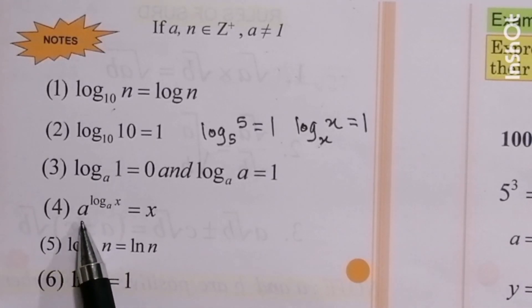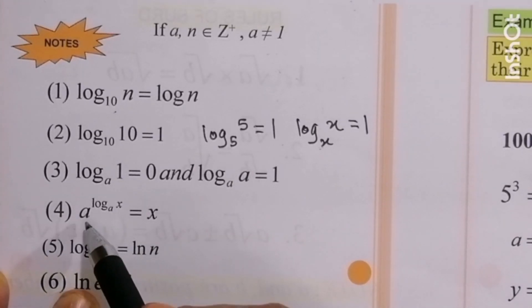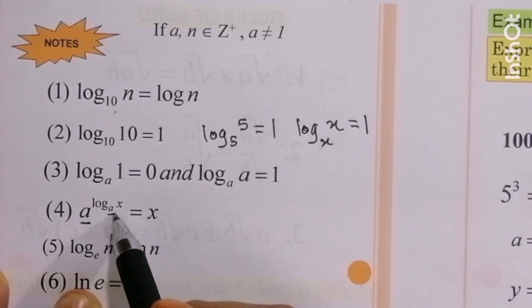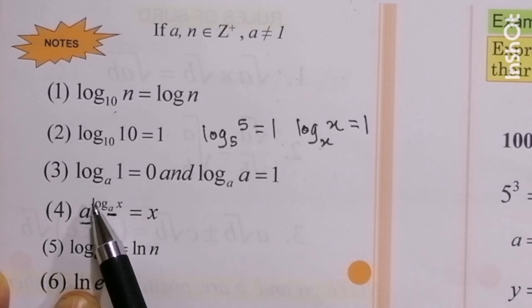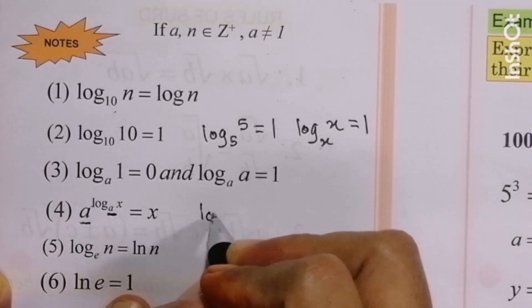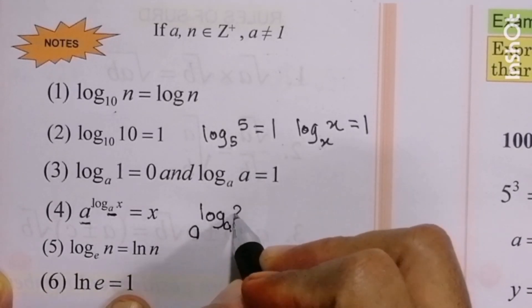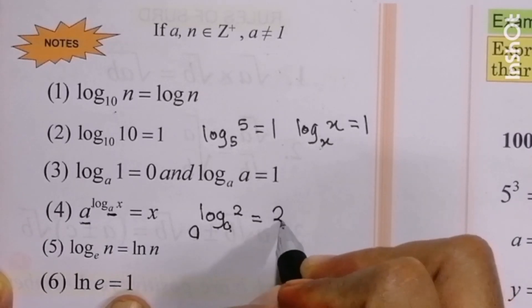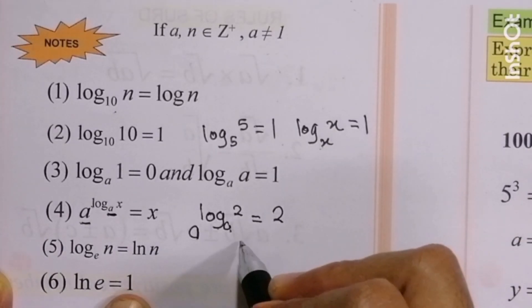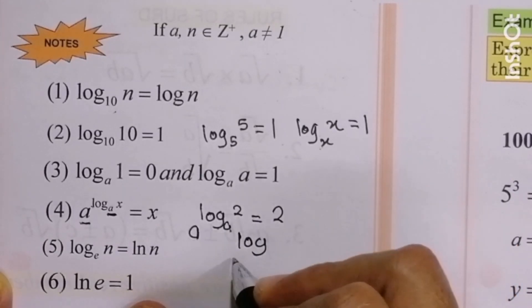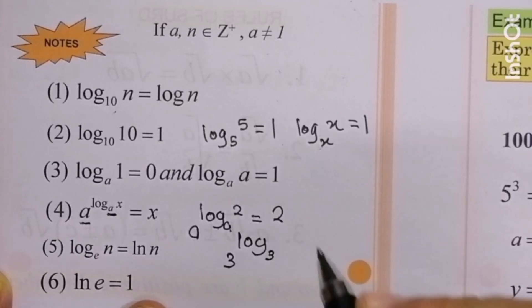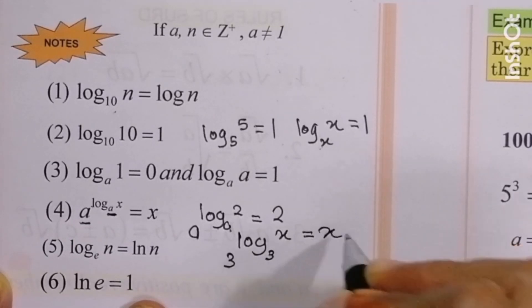Number 4: index base a, log x base a. Here we have index base a and log base a, same. And the coefficient of log is 1, then the answer is x. For example, a to the power of log base a of 2, the answer is 2. Or 3 to the power of log base 3 of x, the answer is x.